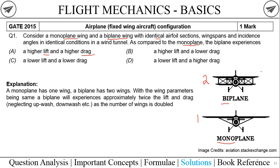Talking about lift and drag: a single wing generates some amount of lift and drag. If we double the number of wings, it must proportionally increase — one wing generates some lift and drag, two wings will generate twice the amount of lift and drag. So the biplane configuration must experience higher lift and higher drag.